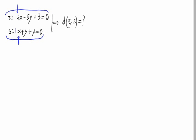Let's calculate the relative position. So, the coefficients of the x divided are 3 for the straight line R and 1 for the straight line S. And let's make it equal the coefficients of the y's, minus 5 divided by 1.